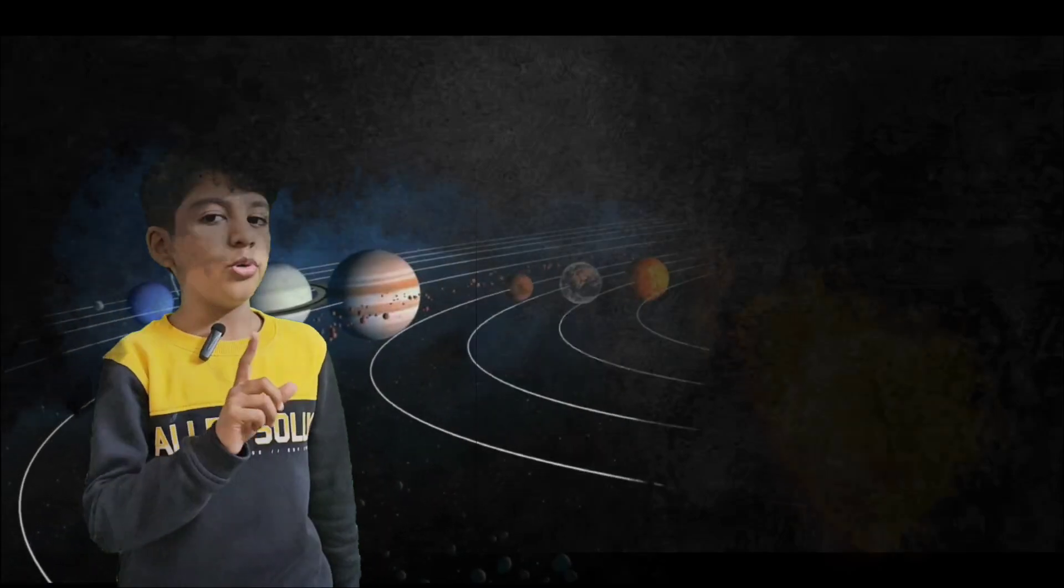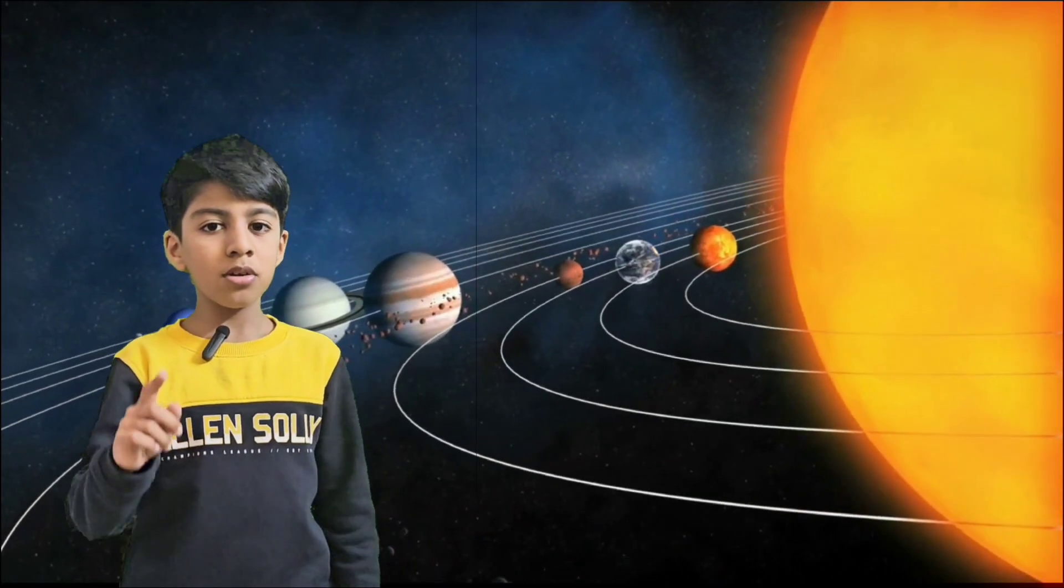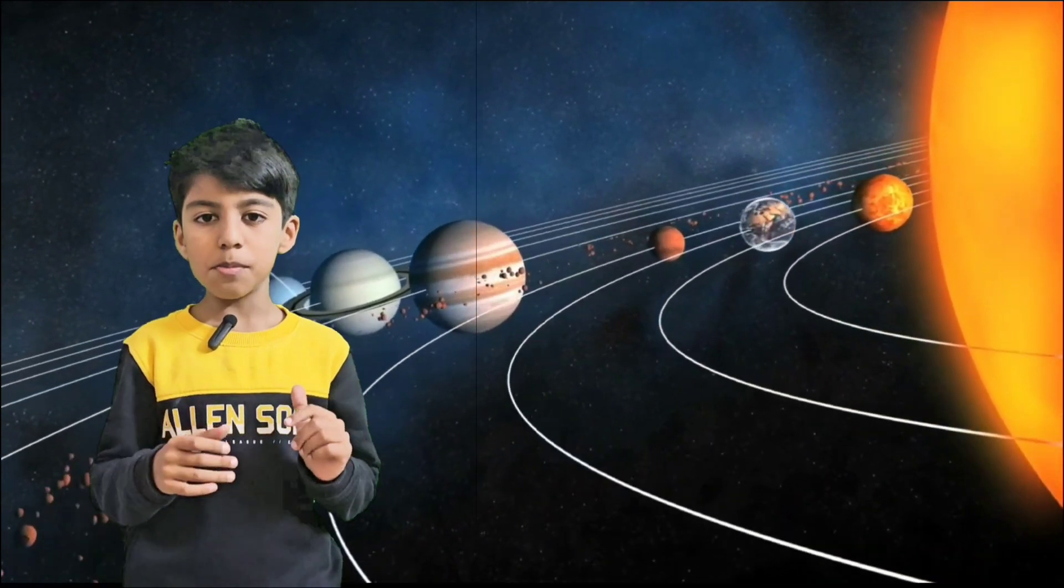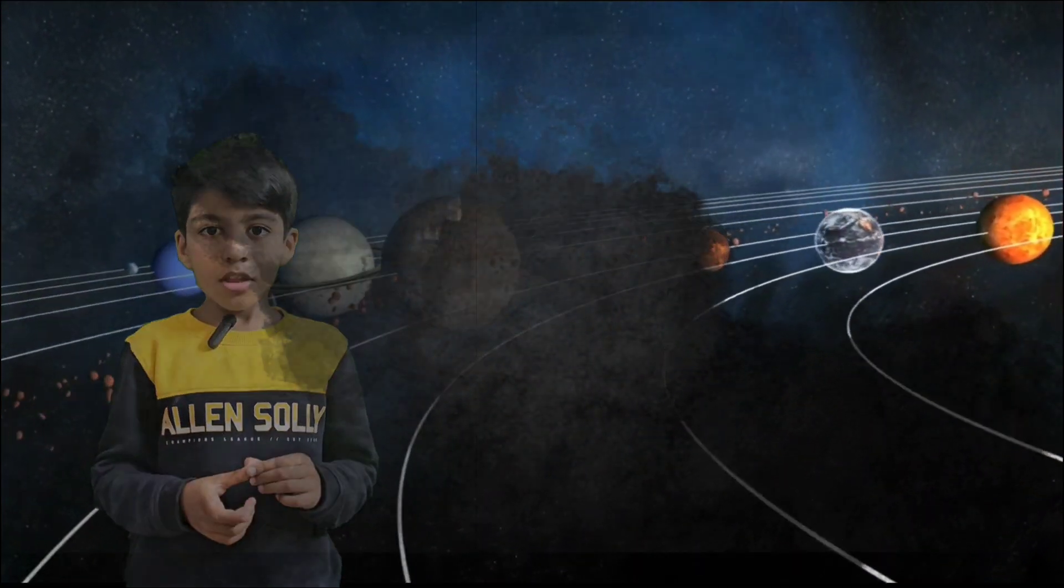Does Mercury have any moons? No, it does not have any moons. Which type of planet is Mercury? Yes, it is a terrestrial planet. Terrestrial planets means the four most nearest planets to the Sun.